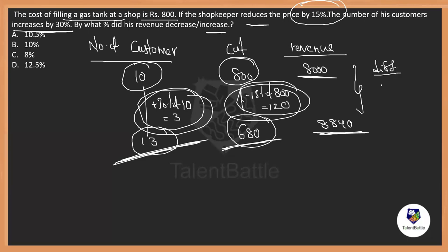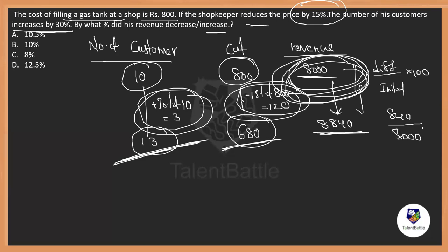How much is the increase? Difference divided by the initial value, into 100. The difference is 840, and the initial value is 8,000. So 840 divided by 8,000 into 100 — the zeros cancel — gives 10.5 percent. So the percentage increase is 10.5%. They did not specify whether it is increase or decrease; they just ask for the percentage. Sometimes they might give plus 10.5% or minus 10.5%, so carefully observe the symbols. Right now it is 10.5%, so Option A is the correct answer. Instead of assuming X and solving algebraically, if we assume a comfortable number like this, solving the problem becomes easy. Assumption works well for this kind of questions.